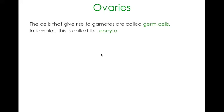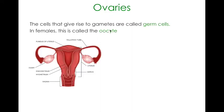The cells that give rise to gametes are called germ cells - the germ cell is the predecessor of the egg. In females that is called the oocyte. Here is a diagram of the female reproductive system: the vagina, the uterus and cervix, the fallopian tubes extending outwards from the uterus to the ovaries where all the eggs are kept. The egg gets released into that gap, makes its way down the fallopian tube, meets the sperm - usually in the fallopian tube - and then implants on the uterus wall to develop into an embryo and fetus.